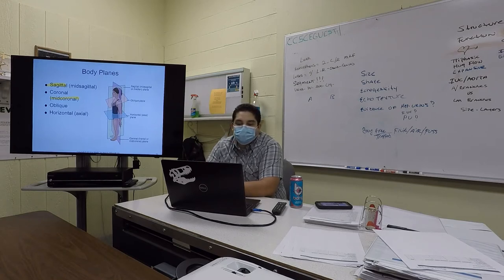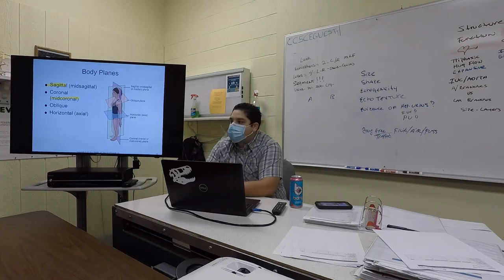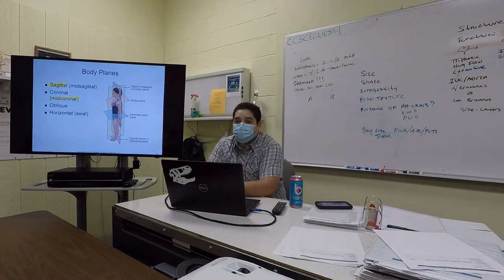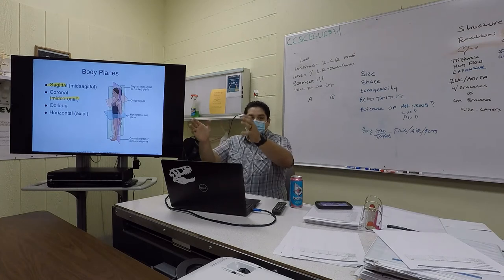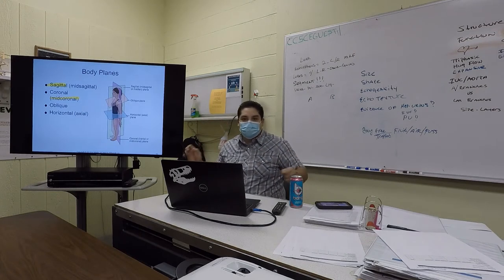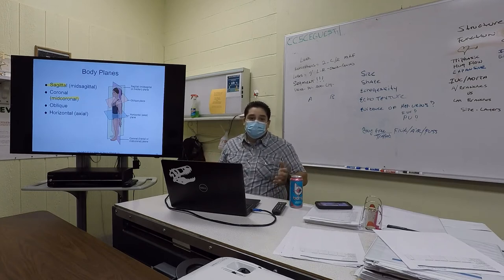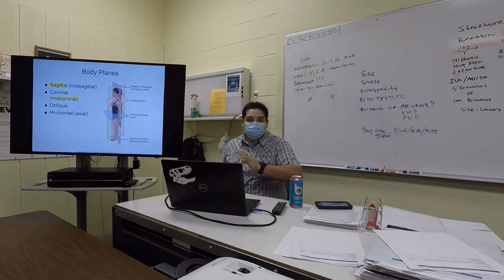Mid-sagittal is the only plane that divides the body into truly equal halves. Our faces and bodies aren't exactly equal left to right - think of photo software that mirrors half your face; everyone looks weird. Because most animals move in one direction, we have a defined front and back, making us unequal front-to-back but roughly equal left-to-right.